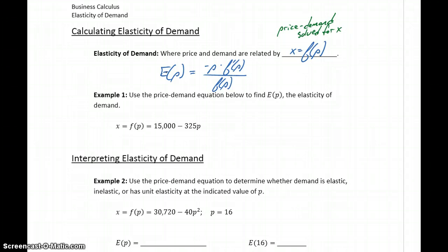In our first example, we want to use the price-demand equation below to find this elasticity function, E of P. What's important to note here is that this function is already solved for X, meaning the way we have this written, P is our independent variable, X is our dependent variable.